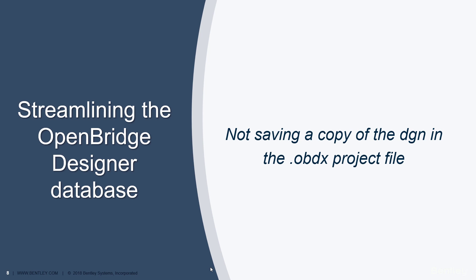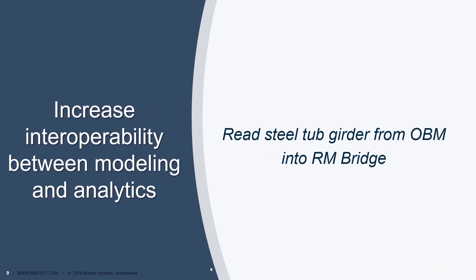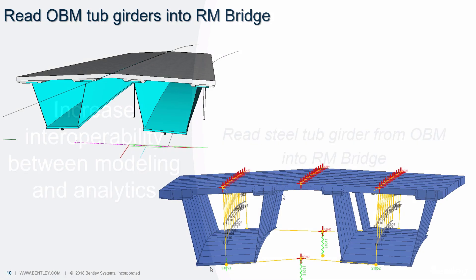We have also made a change to the OpenBridge Designer OBDX file, in which we used to save a copy of the DGN inside the OBDX. Not anymore — now we just save the location information. We also increased the interoperability between modeling and analytics, because now we can read the steel top girder made in OBM and send it to RMBridge for further analysis and design.